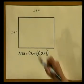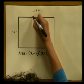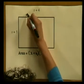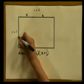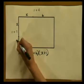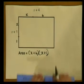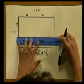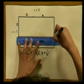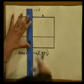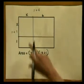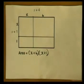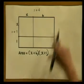Here you will see that the length of one side is x plus 4. So let's fill it in — this would be our x, and this would be our 4. And here we have x plus 1, so let's call this x and this 1. We can see that this rectangle is divided up into 4 smaller rectangles. Working out the area of each individual rectangle is easier than working out the area of the whole rectangle.